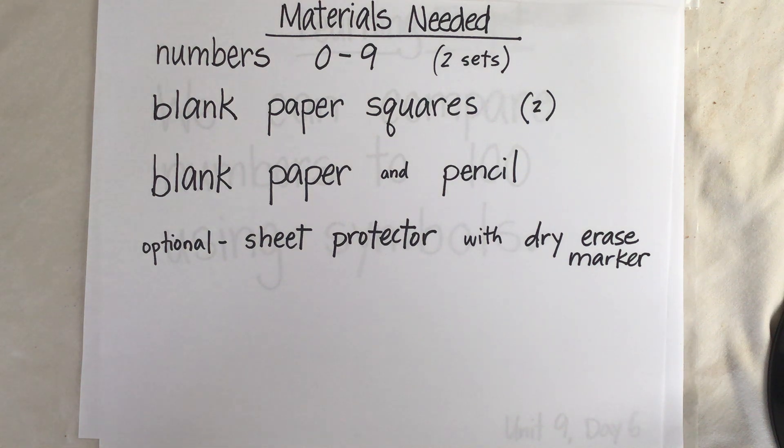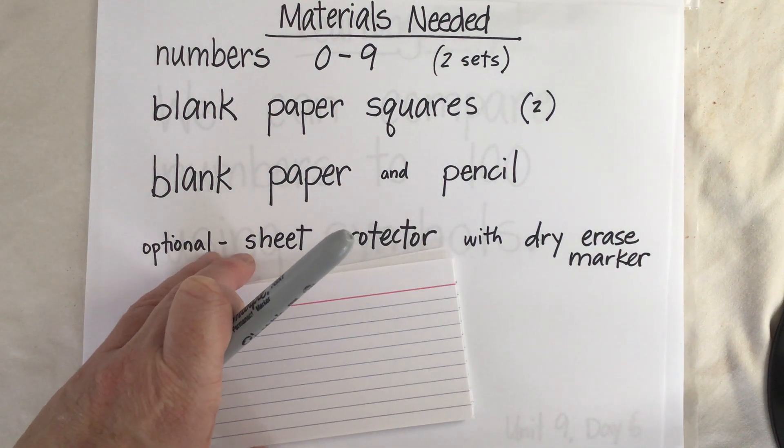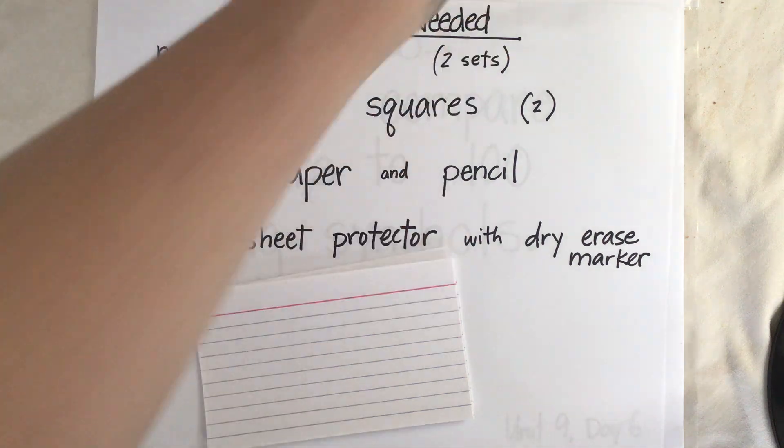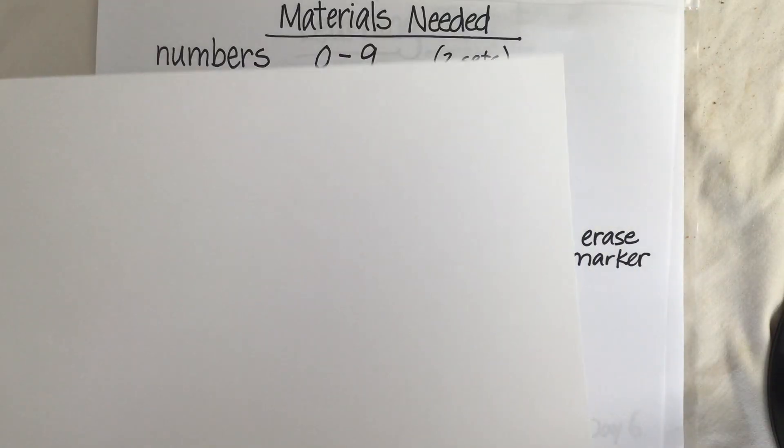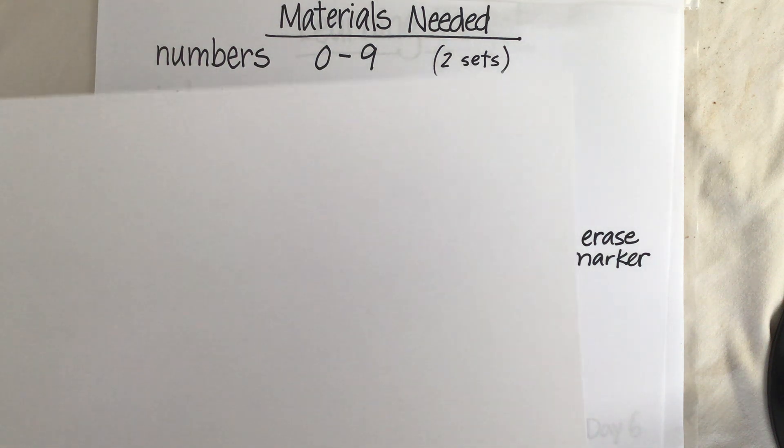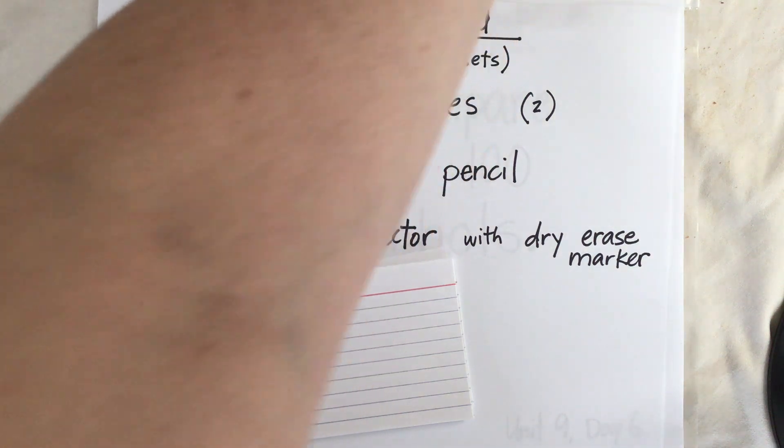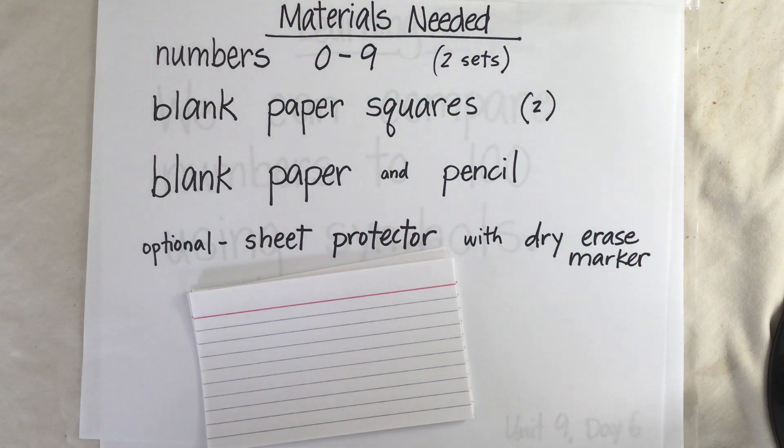If you have index cards, I'm going to show you how to make our number sets using index cards. But if you just have blank paper, go get a couple sheets of blank paper and you can also make your numbers and your blank paper squares just with blank paper. You'll need a pair of scissors. So pause the video here, go get a couple materials, and then come back and push play when you're ready to move on.